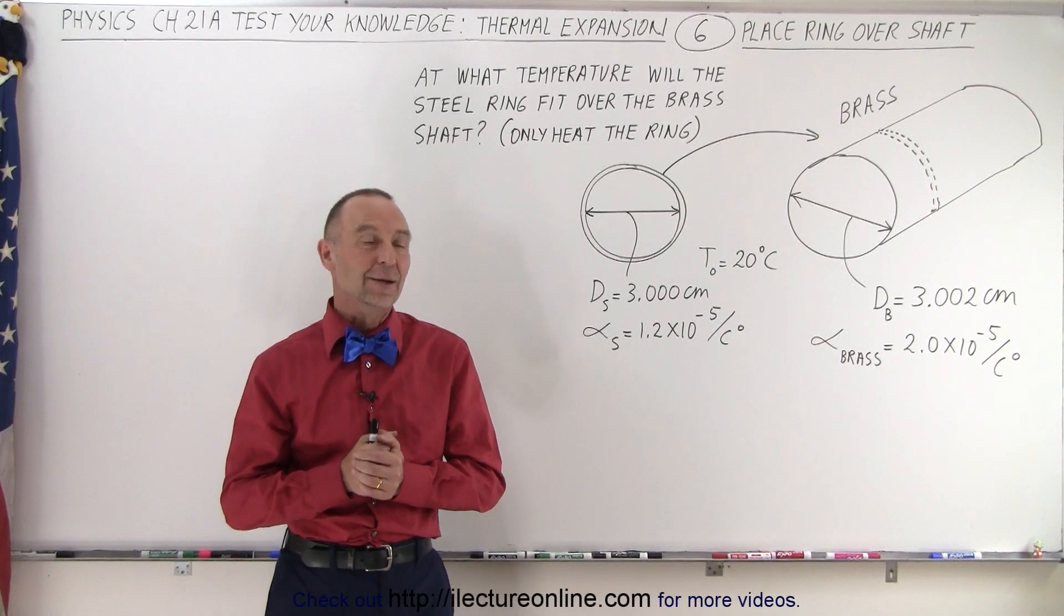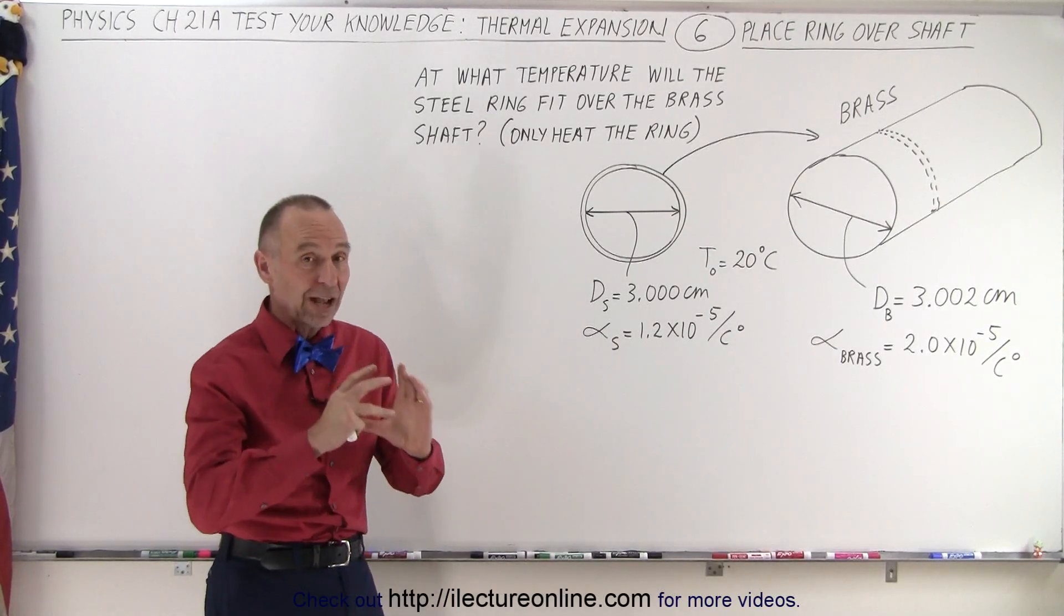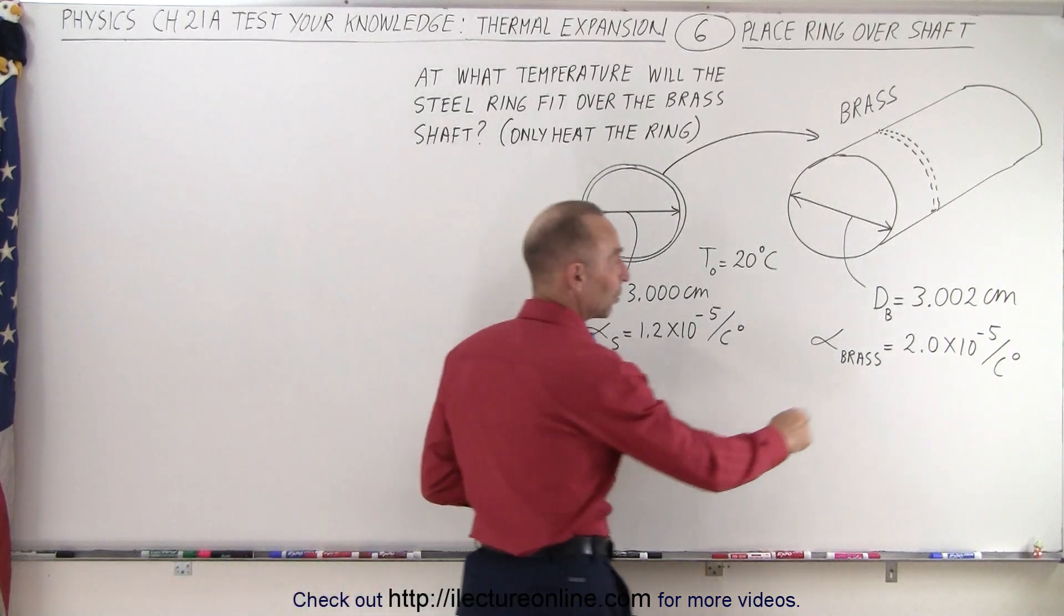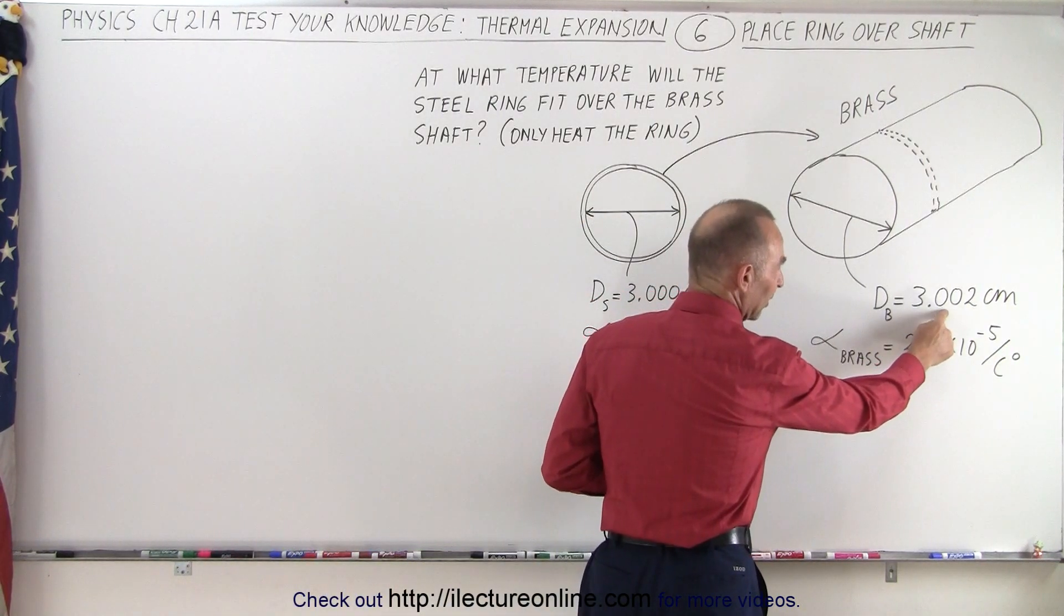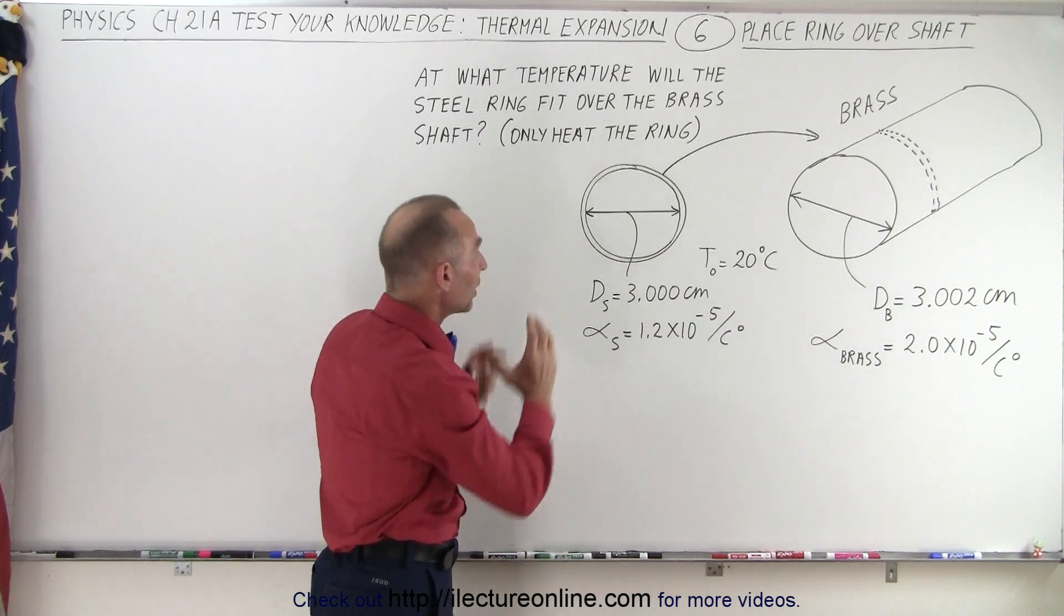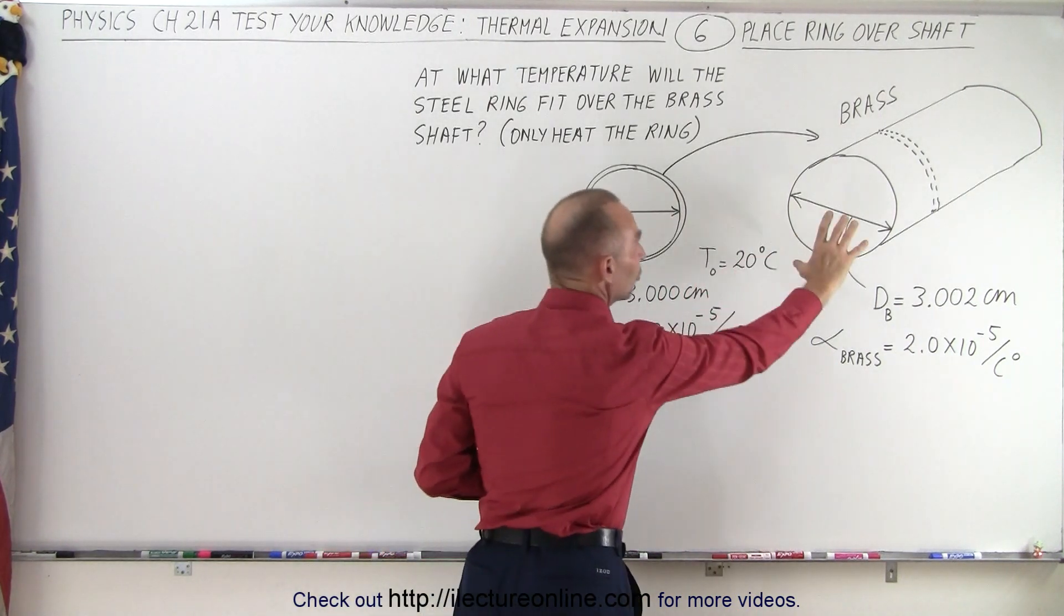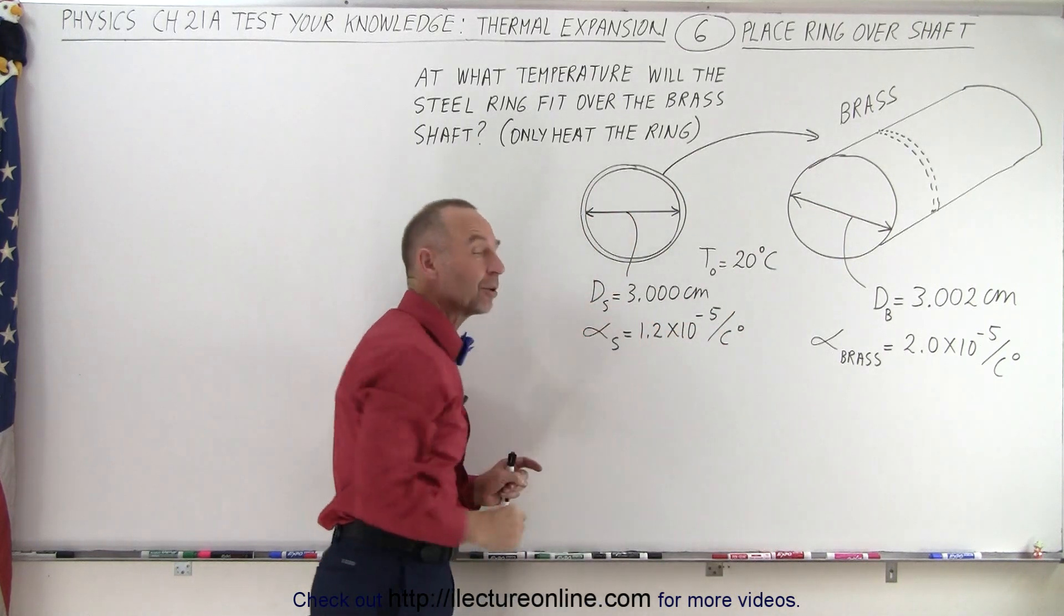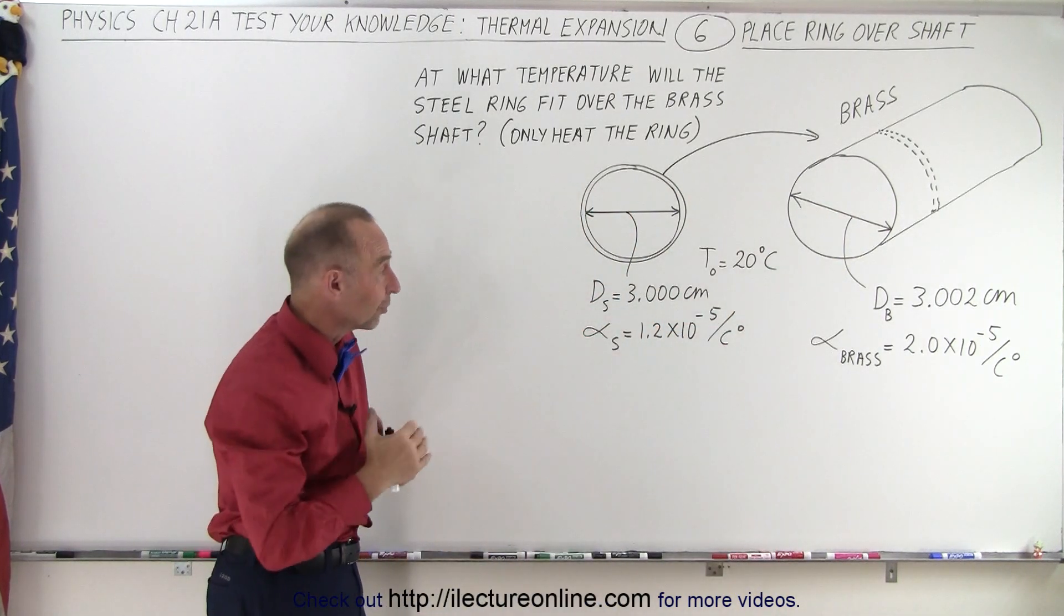Welcome to lecture online. Now here we have a problem where we have a brass shaft that has a diameter slightly over 3 centimeters, 3.002 centimeters, and a steel ring which needs to be placed over the shaft, but the inner diameter is only 3.000 centimeters.